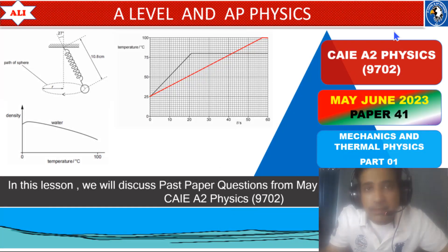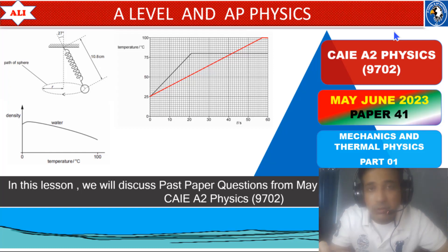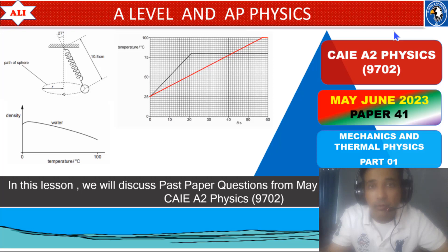Welcome to A-level and AP Physics. In today's lesson we will discuss past paper questions from May/June 2023 Paper 4 Variant 1. As always, we will discuss these questions in detail so you can improve your conceptual understanding of A2 Physics and have a better understanding of these questions.